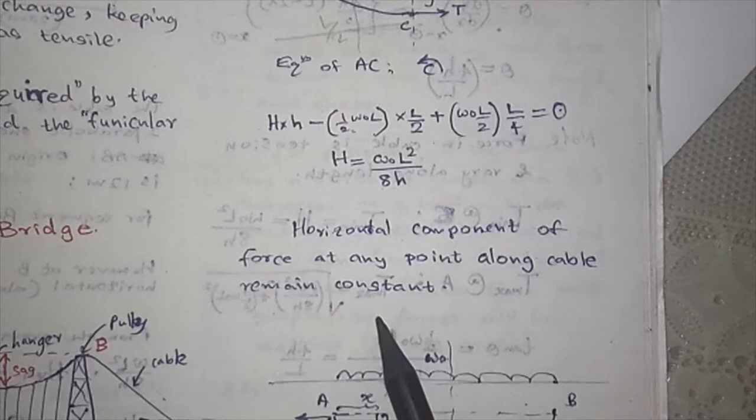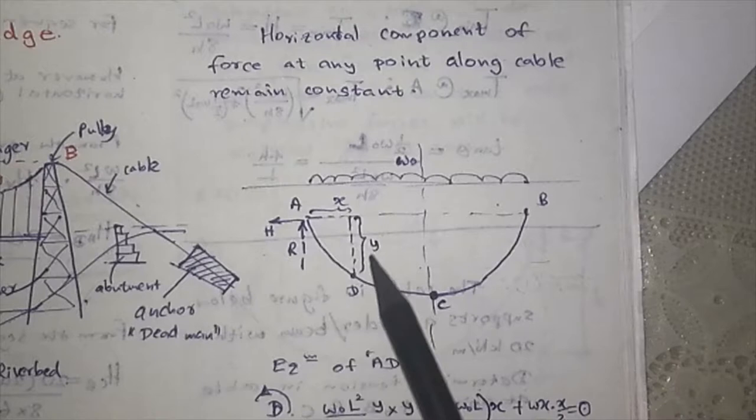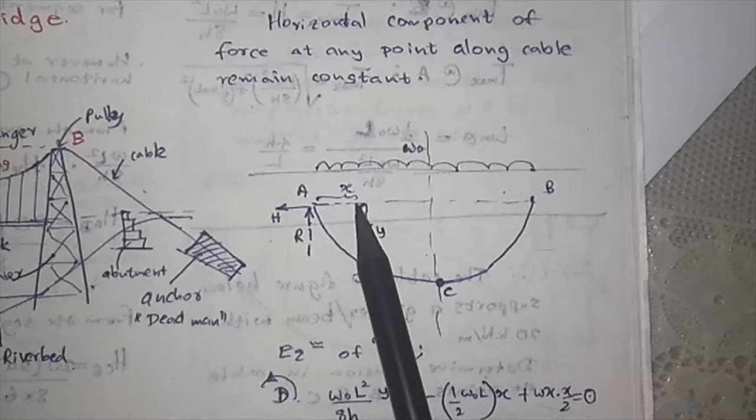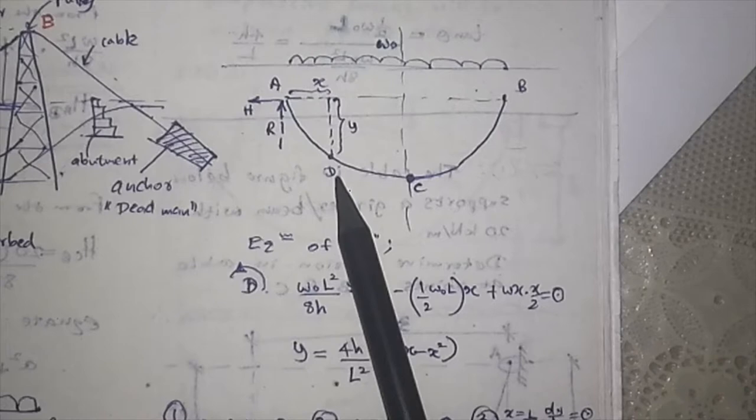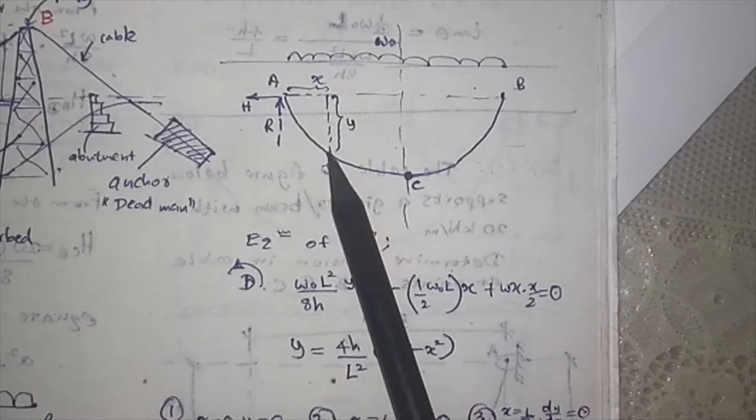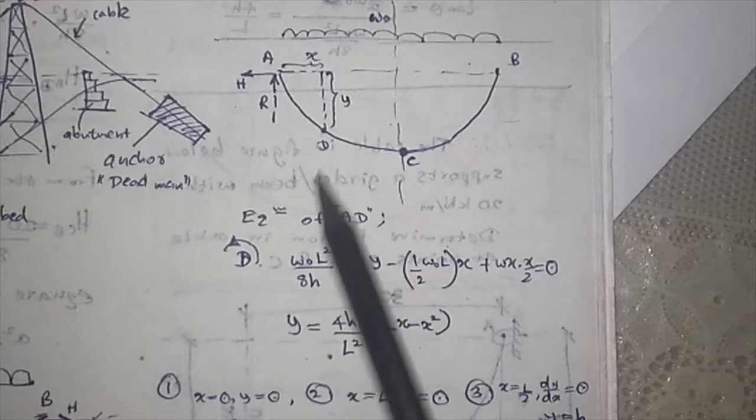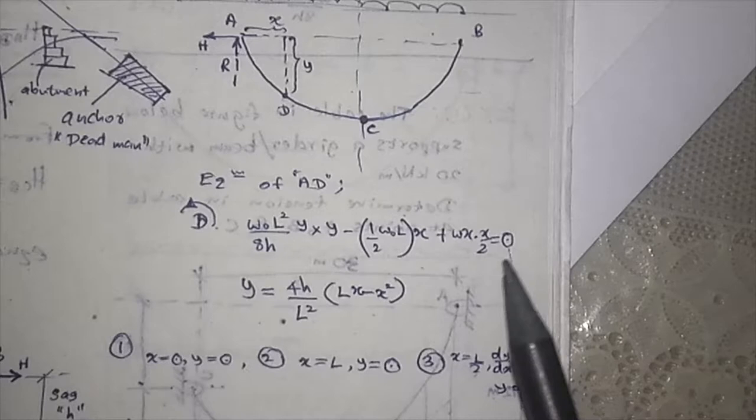When you see the entire cable, you have W naught, you have H and R. You can consider a certain point with horizontal distance X and vertical distance Y at some point D. Now you can consider the equilibrium of portion AD. Take the equations around point D for equilibrium. You can write the equations for moment, and for equilibrium it should be zero. Then you can determine Y with respect to X.